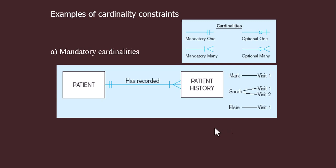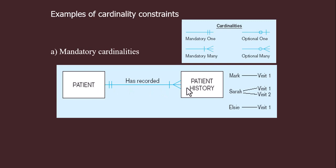Further examples of cardinality constraints — mandatory cardinality: as stated previously, cardinality can be mandatory one, optional one, mandatory many, or optional many. Here we have a cardinality of mandatory one, and here mandatory many.